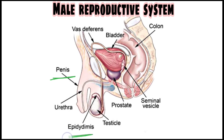The epididymis is present above the testis. It is useful in the process of sperm production and provides glucose in the form of energy to help in the production of sperm.